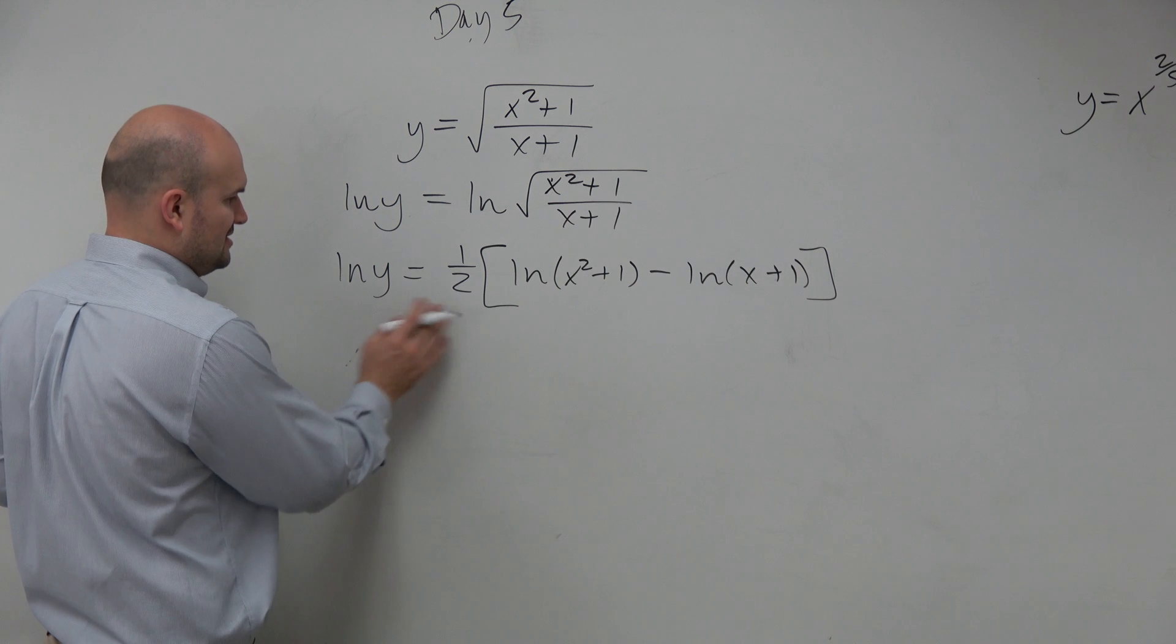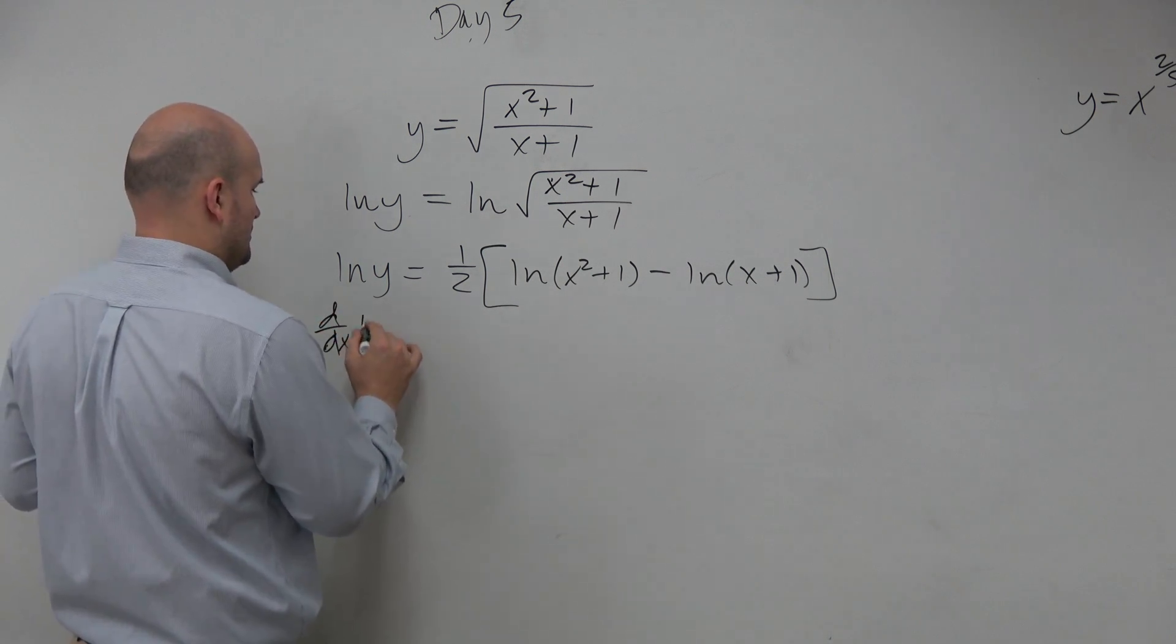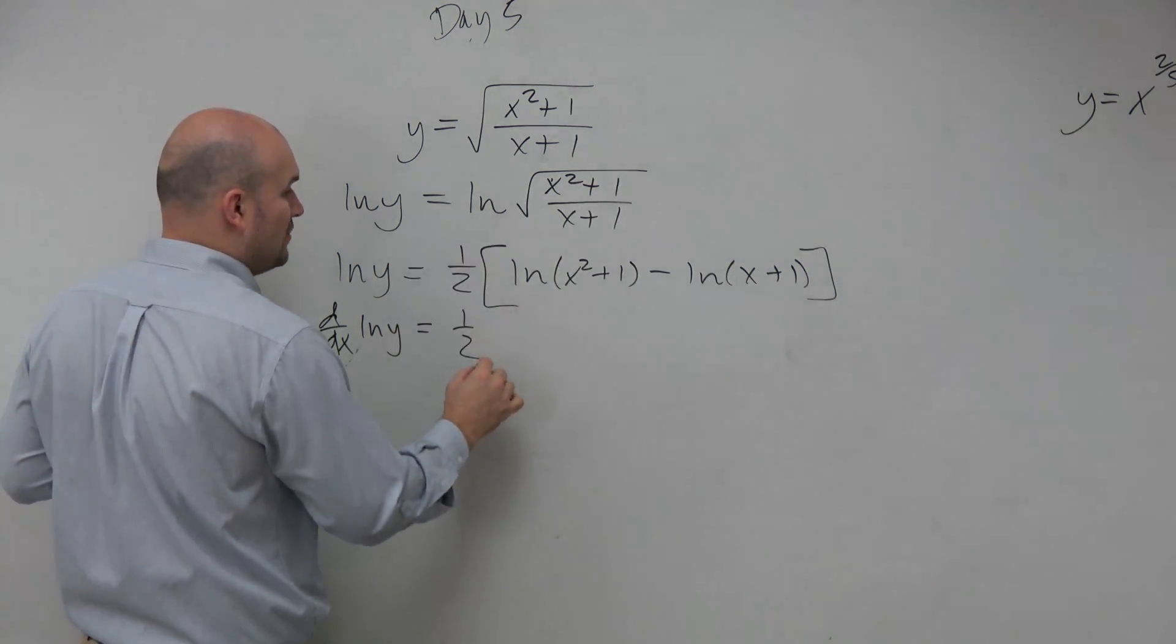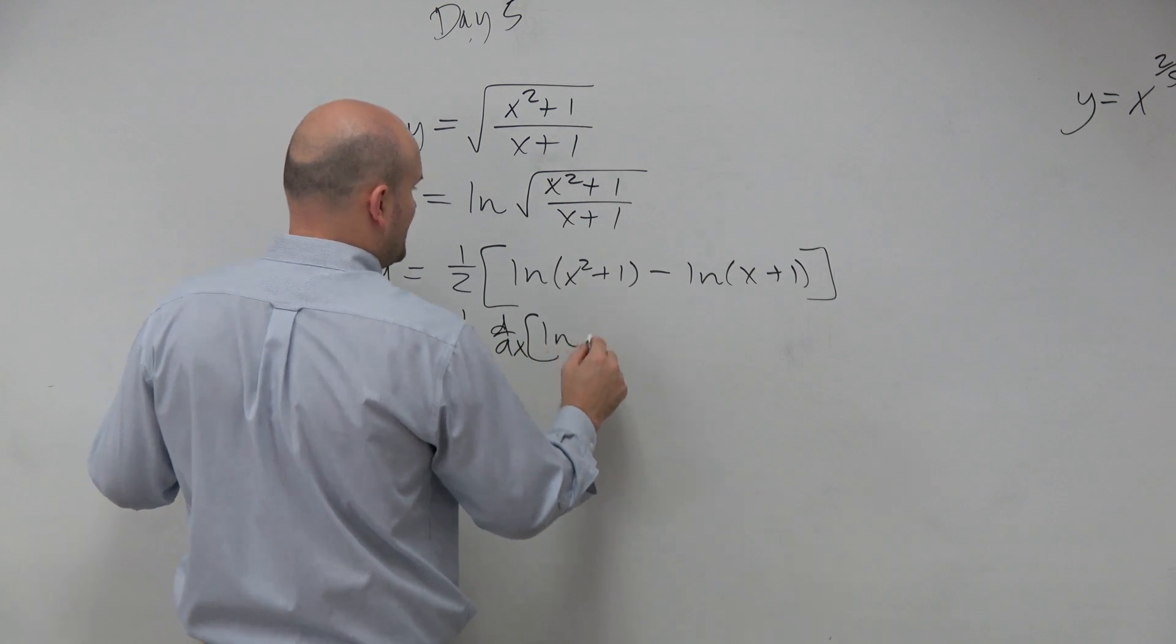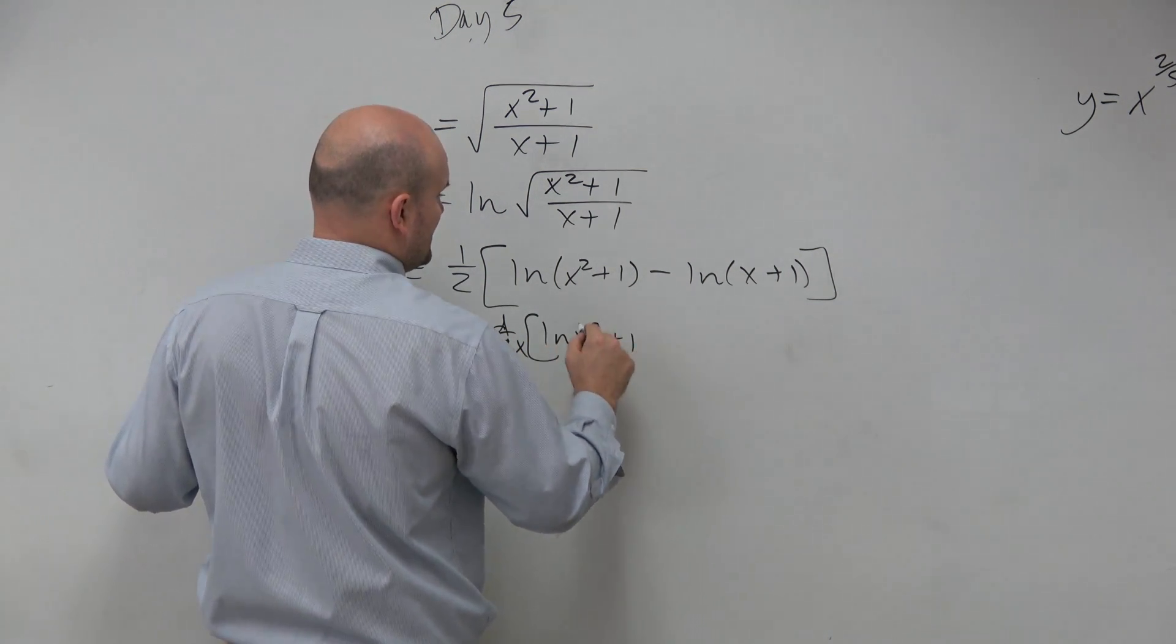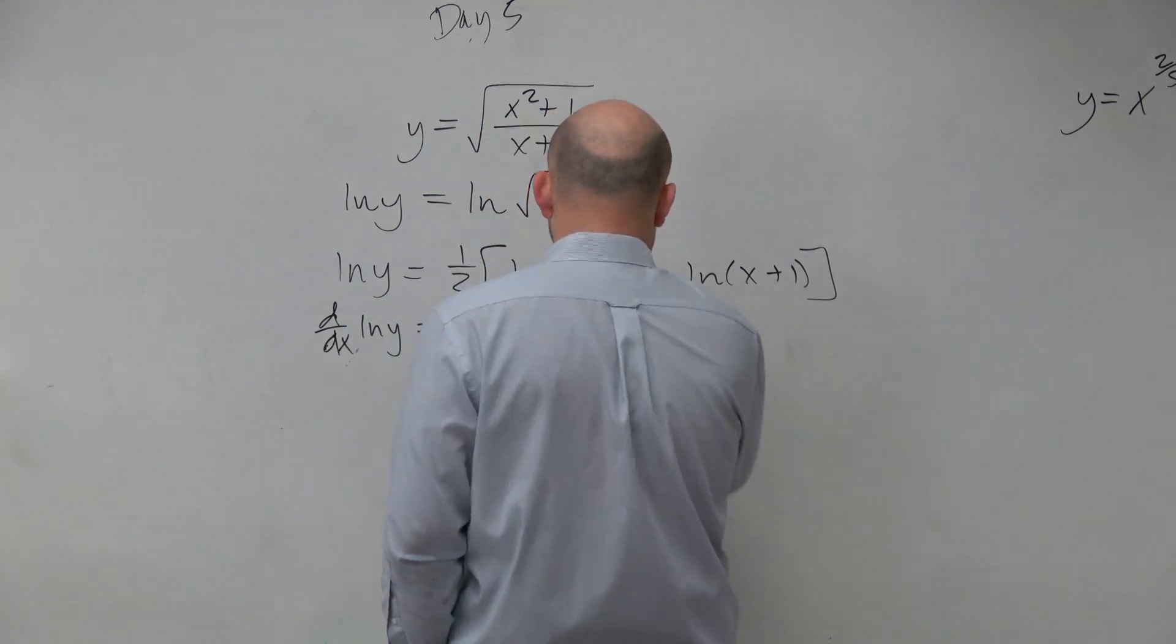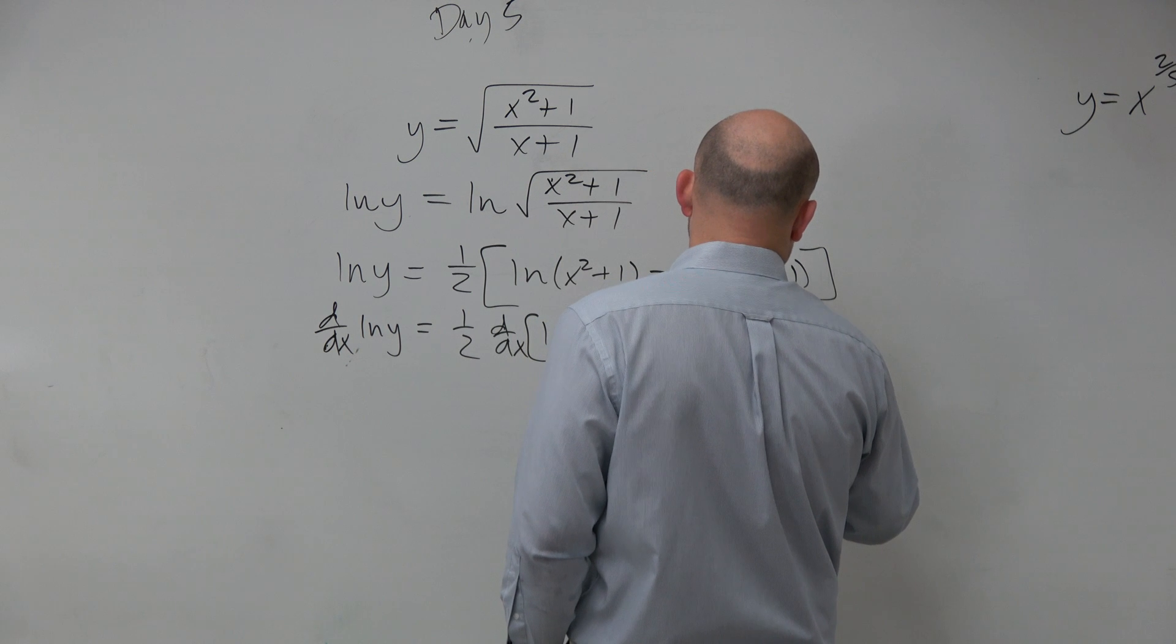Now it's not really as bad because if we're going to differentiate with respect to x, we can still take that one half out and differentiate here. You could also think of this as applying the distributive property and differentiating each of them equally.